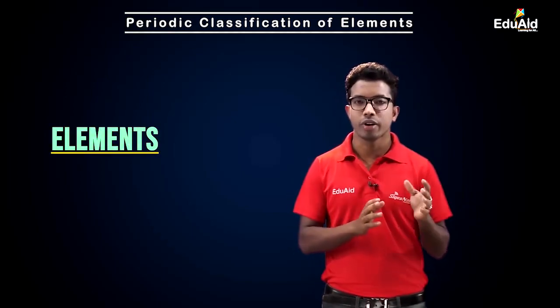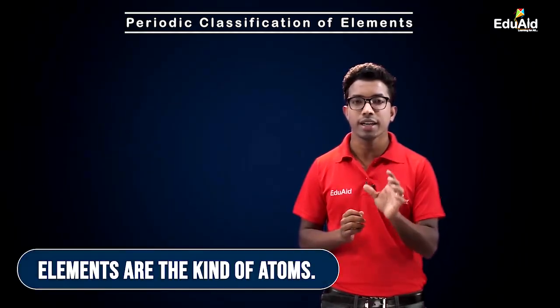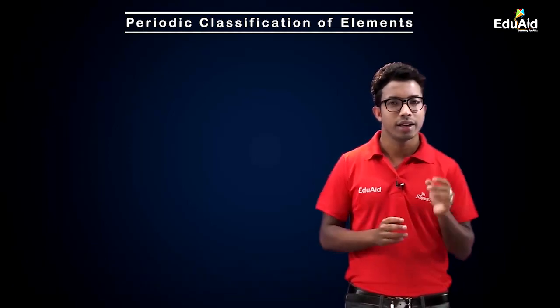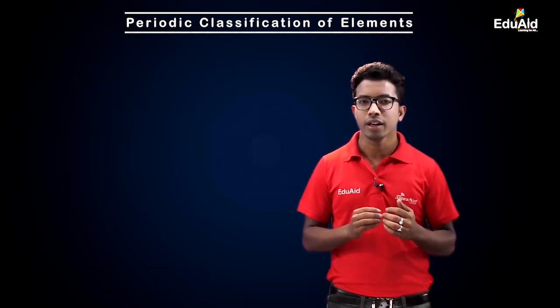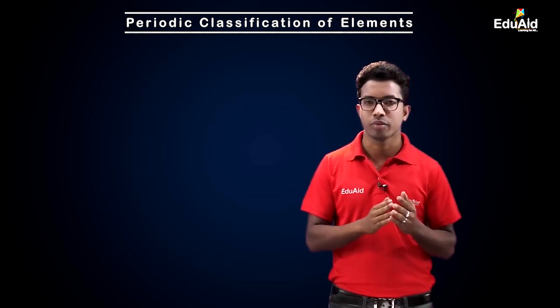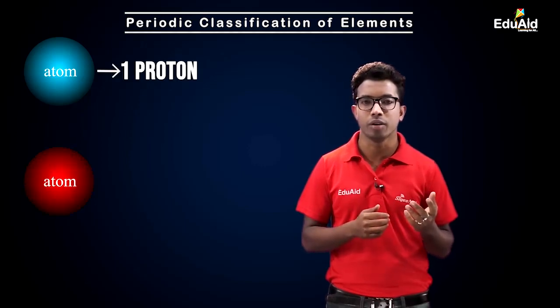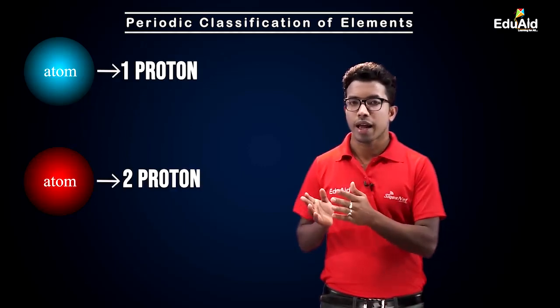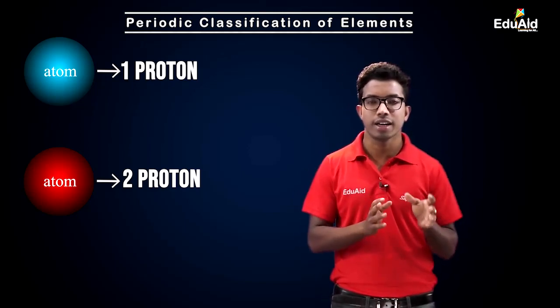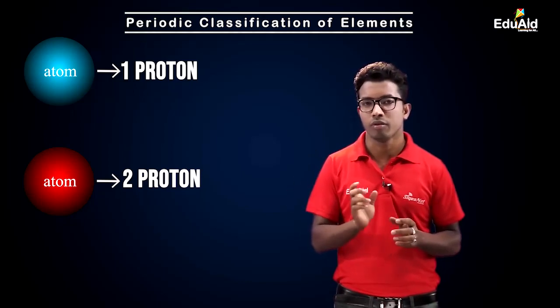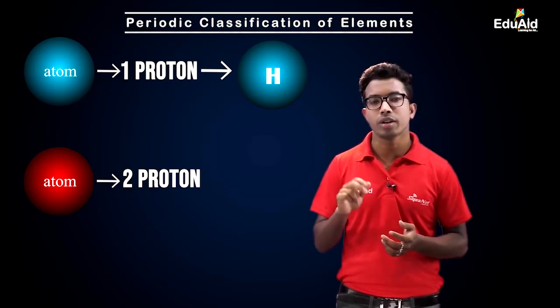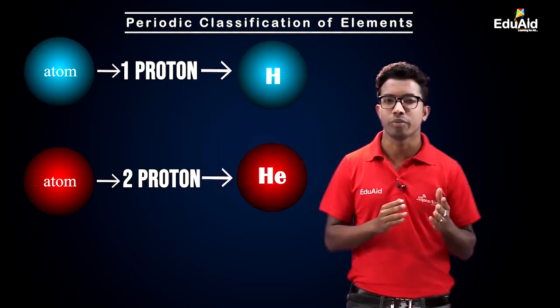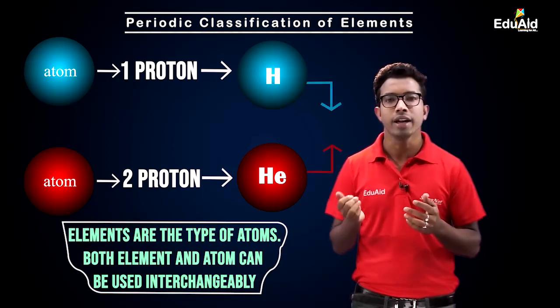Now let's understand elements. An element is not a different kind of thing — it's a category, specifically a kind of atom. What kind of atom it is is determined by the number of protons. All atoms are made up of electrons, protons, and neutrons, and the number of protons can differ between atoms. These types of atoms are named as elements. For example, if an atom has one proton it is named hydrogen; if another atom has two protons it is named helium.